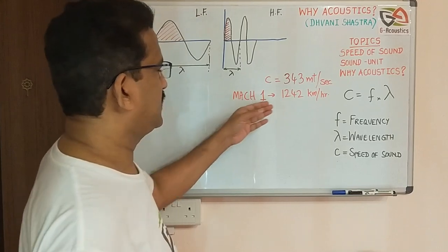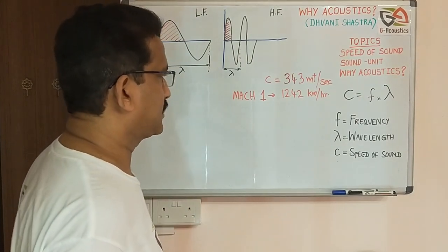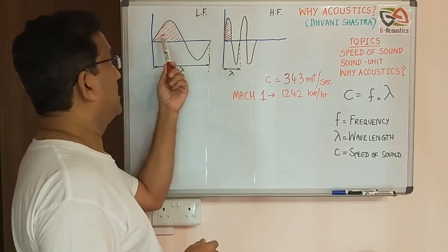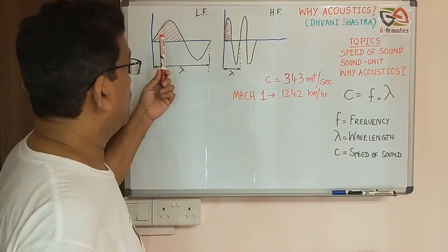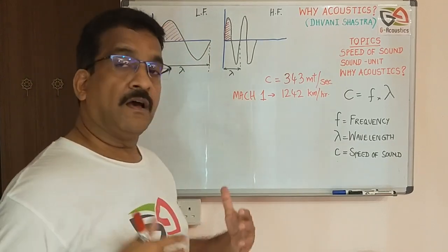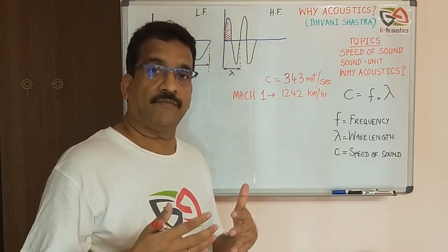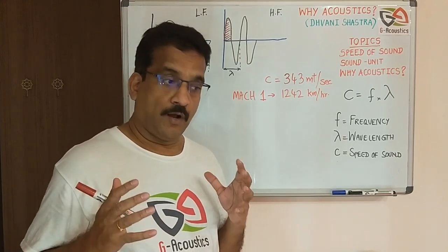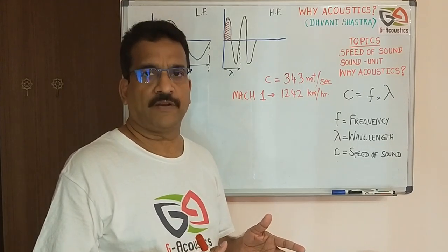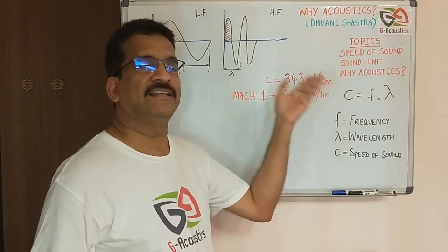That's a little information about the speed of sound relative to vehicles we encounter in life. Looking at the shaded portions on the wave diagram — low frequency has more energy, shown by the larger shaded area, whereas high frequency has low energy content. That's why we need big amplifiers to produce low frequency, whereas a very small amplifier is enough for high frequency. That is the relationship between frequency, wavelength, and the speed of sound.